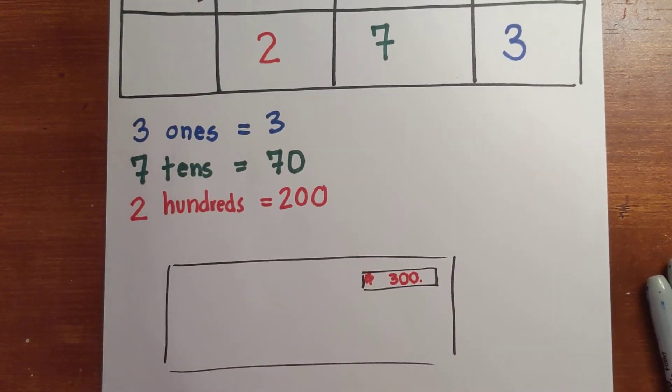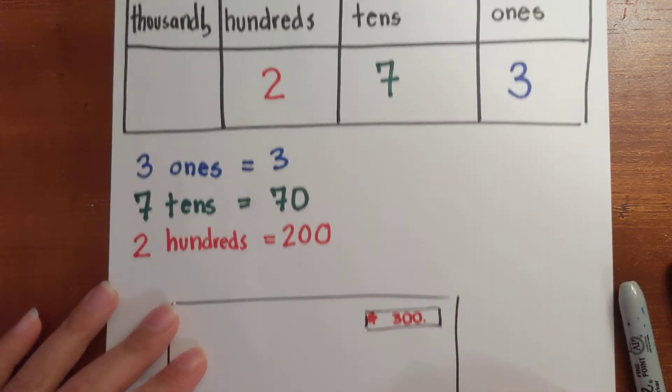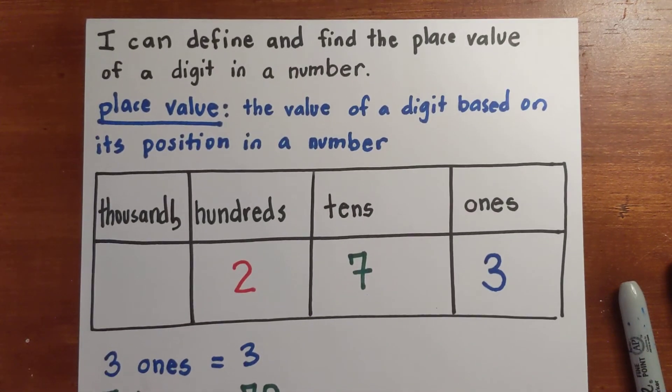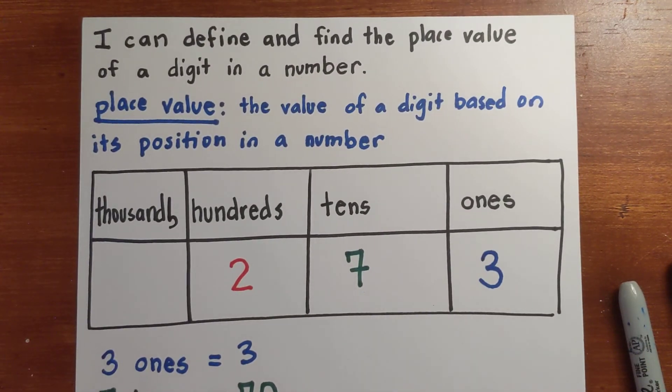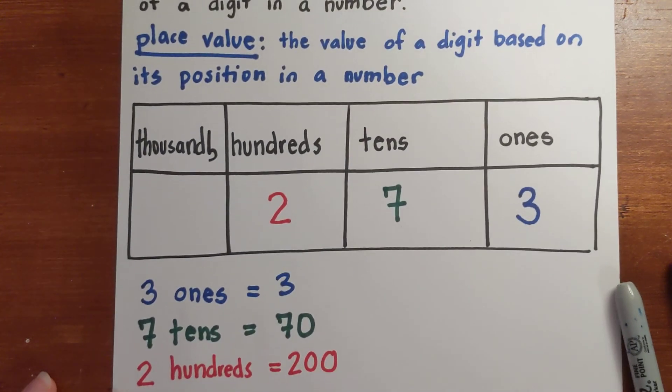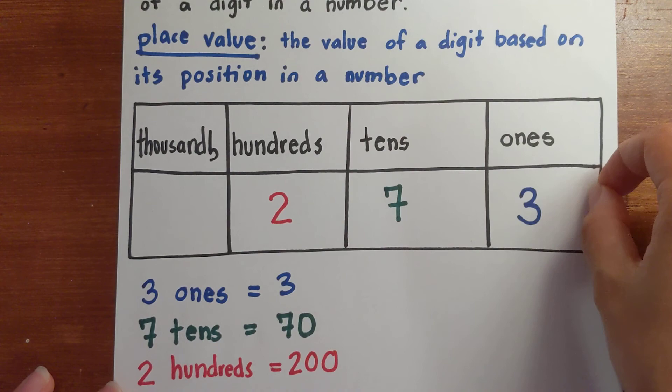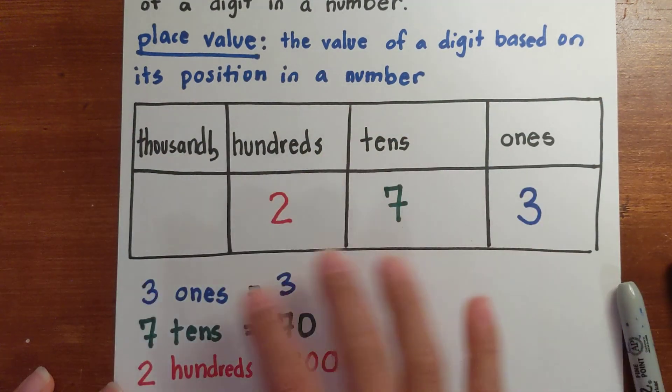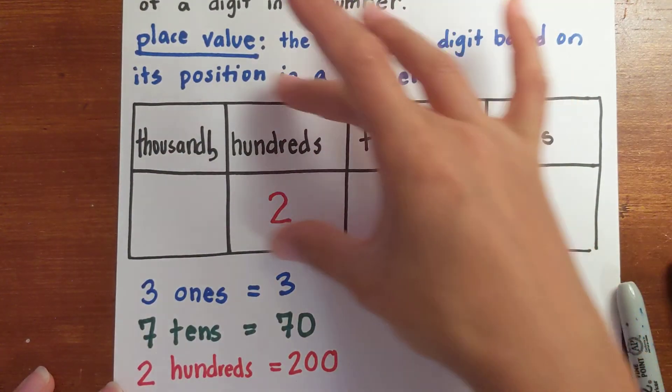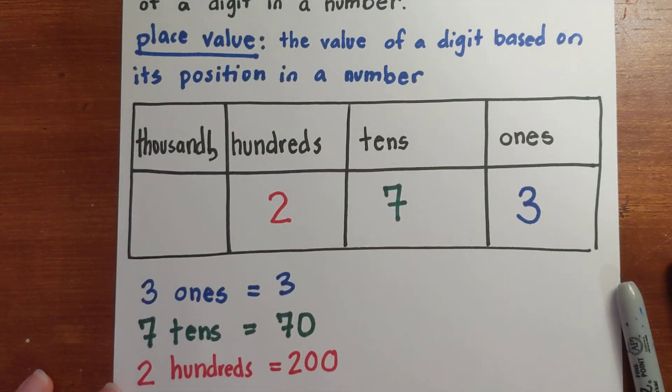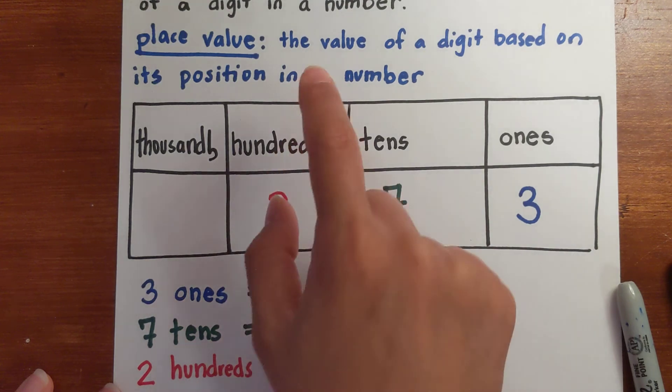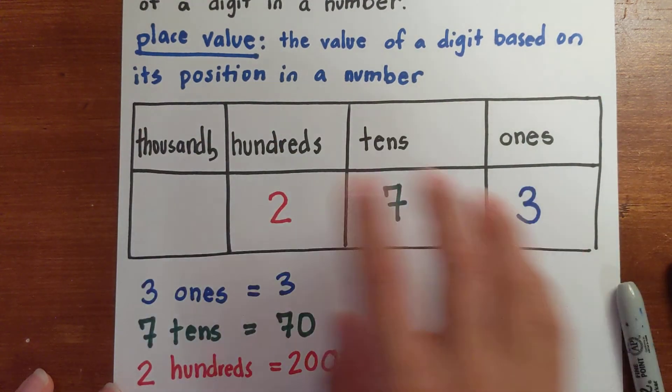I'm going to add that decimal there so I can't keep adding those zeros. So, let's go back and review really quickly. The I can was, I can define and find the place value of a digit in a number. So, place value is the value of a digit based on its position in a number. And a good tool you can use is a place value chart. This is just a whole number. So, we have ones, tens, hundreds, thousands.